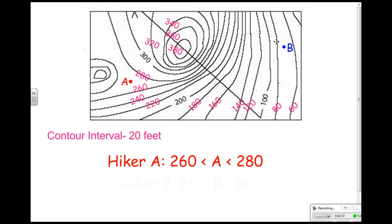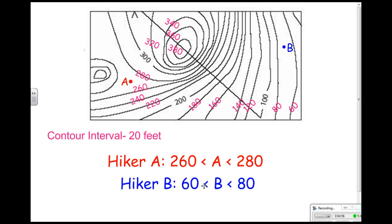Let's look at hiker B. Again, he's not on a specific elevation line but is in between two numbers. What two elevations is he in between? He's in between 60 and 80, so we would say that 60 is less than B, which is less than 80.